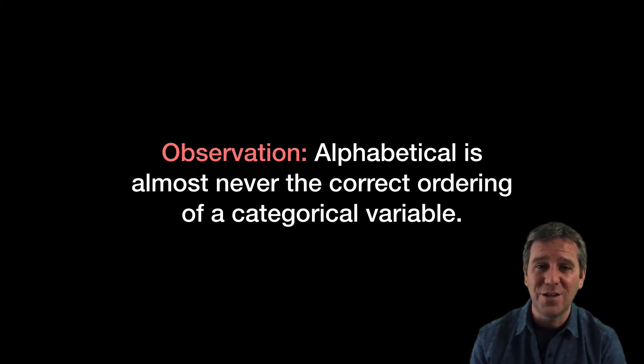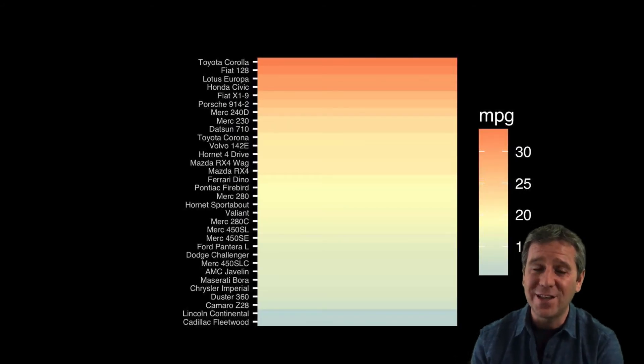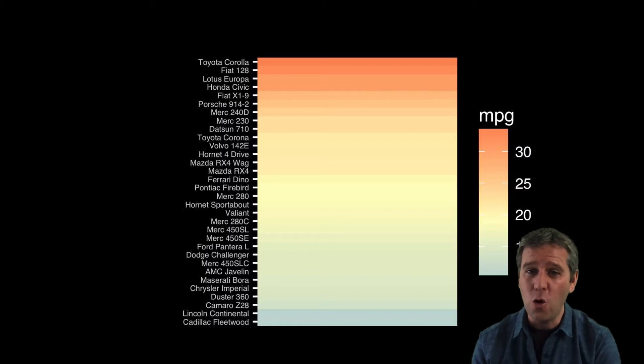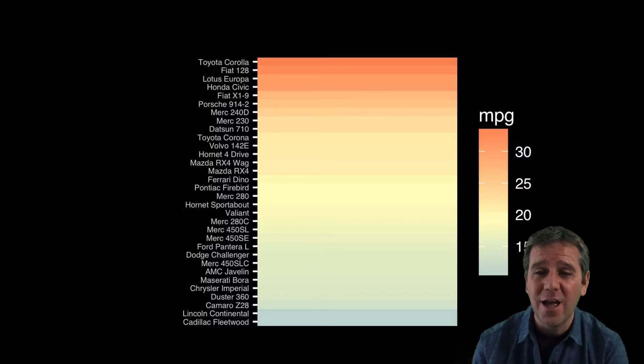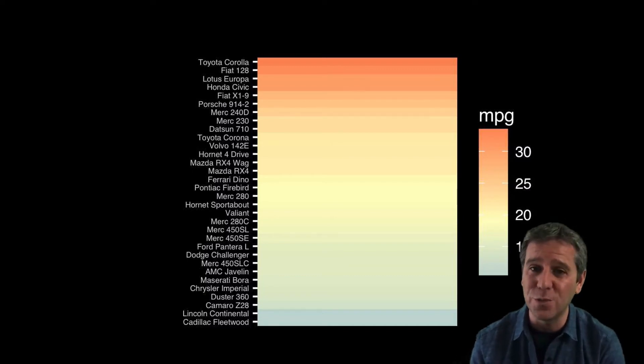The key observation is that ordering matters. The way we have things ordered along that axis matters. If this plot was arranged alphabetically by car name—which is never the correct ordering of a categorical variable—we can improve it. If I order it by miles per gallon, we can improve this plot quite a bit because the order along the vertical axis actually tells us something about the ranking.